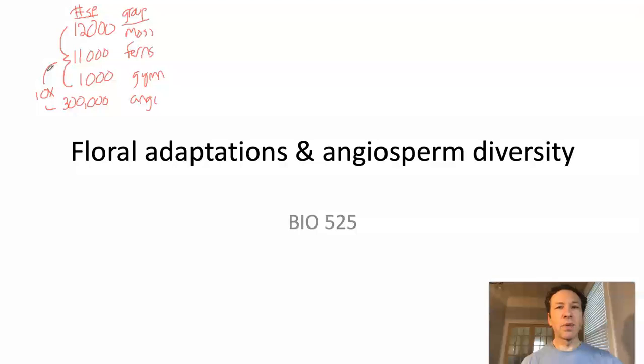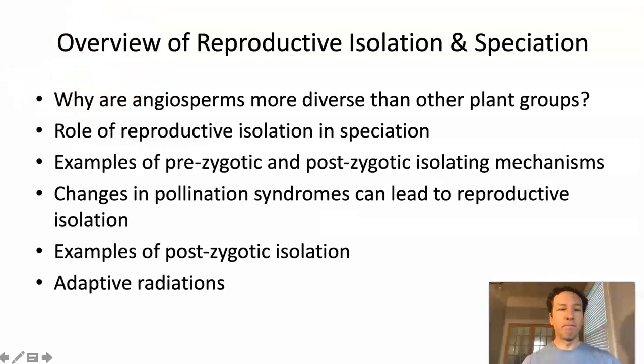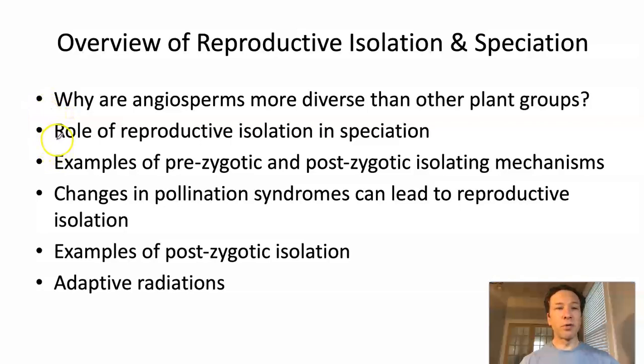That's a dramatic difference, and it seems like there needs to be some explanation for why they are so diverse. Here is an outline of topics for today's lecture. First, we'll talk about why angiosperms are more diverse than other plant groups. We'll then go on to talk about speciation or divergence more generally, and we will emphasize that reproductive isolation — some barrier — is necessary between populations that are diverging in order for them to become different species.